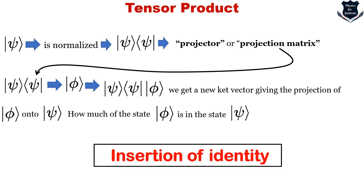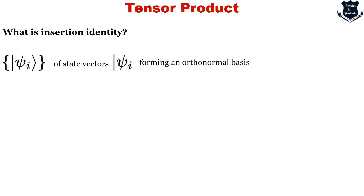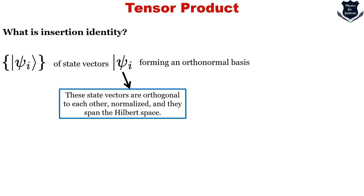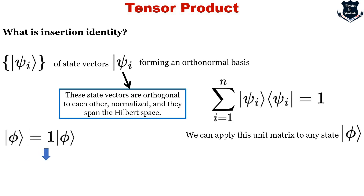Another important application of the projection matrix is called insertion of identity. When we have a set of vectors that form an orthonormal basis — meaning the state vectors are orthogonal to each other, normalized, and they span the Hilbert space — the sum of the projection matrices of these basis vectors gives an N by N unit matrix, denoted accordingly.